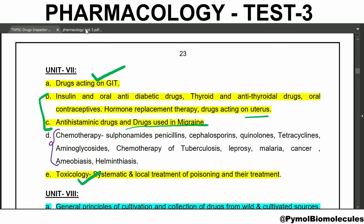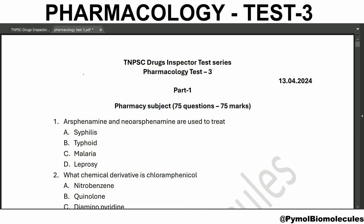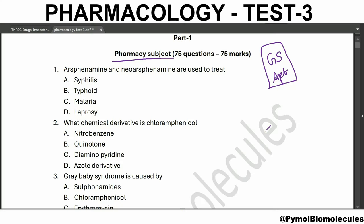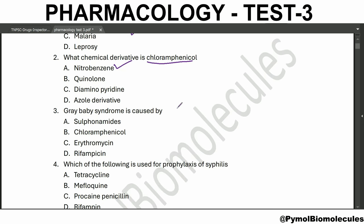Let's go into the test. This test contains three parts: the first part is the pharmacy subject, the second is general studies, and the third is aptitude and mental ability. Horse phenomenon and neo-horse phenomenon are used to treat syphilis. Ehrlich discovered that these drugs can be used for chemotherapy. Chloramphenicol is a nitrobenzene derivative.